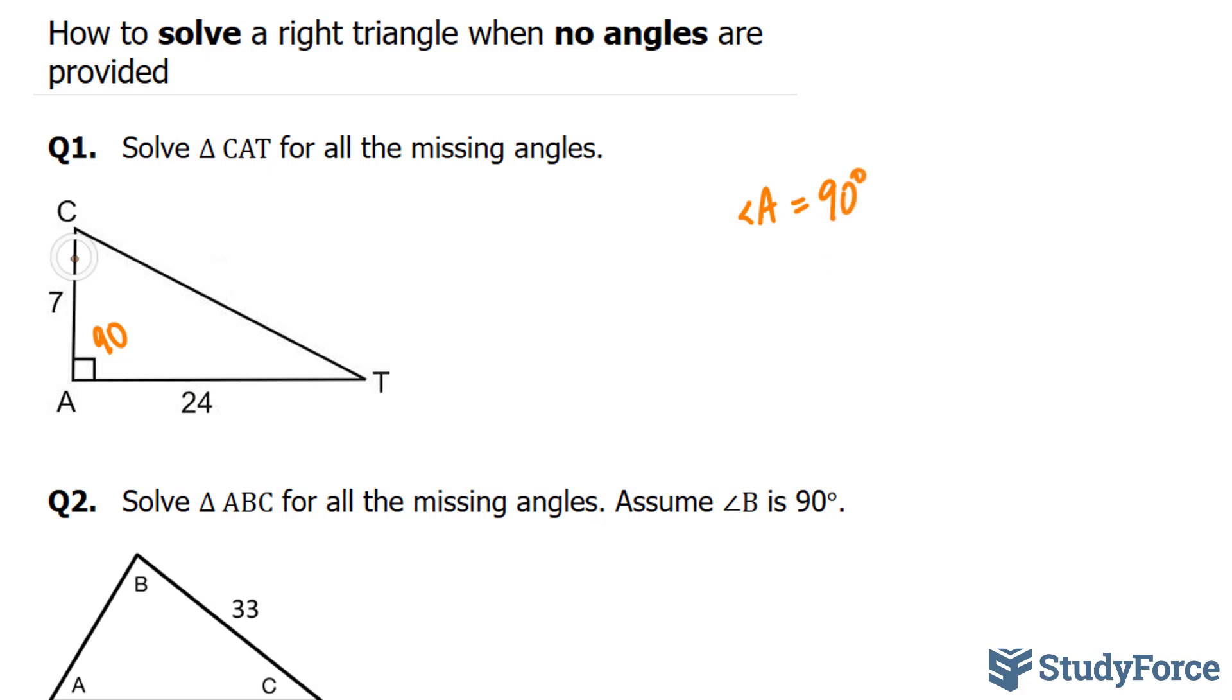But we need to find angle C and angle T. Now, what you have to do is select a reference vertex. I'm going to select this reference vertex, but you could also select this vertex to be your reference. And the one that you select, you want to call it theta. And that symbol right there represents theta, the Greek letter.